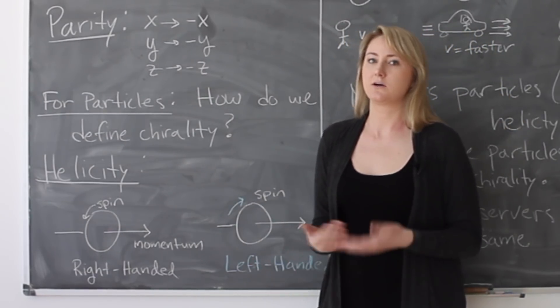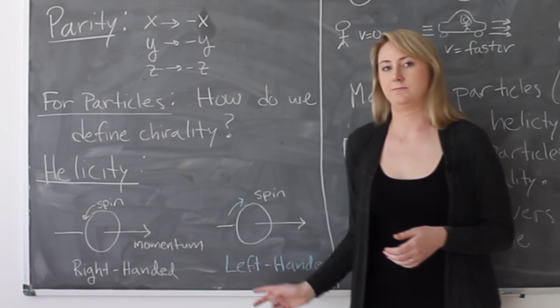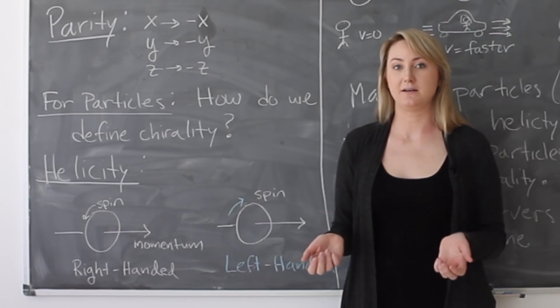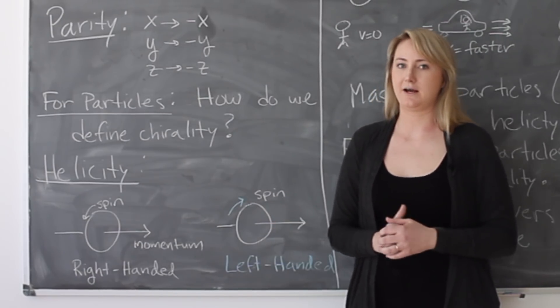So for particles, they're quantum mechanical objects. We know things like their direction of propagation, their direction of motion, their momentum. And we also know things like their spin. For example, electrons can have spin positive one half or spin minus one half.